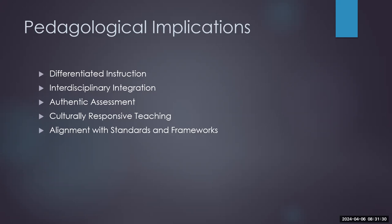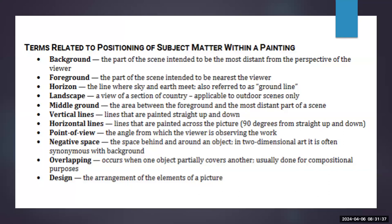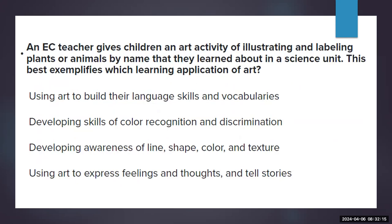Here's some more vocabulary specifically about paintings. Background and foreground are pretty obvious — most of us know what those are and what the horizon line is. Landscape is your outdoor scenes, a view of a section of country. Midground is the area between background and foreground. Most of these are pretty obvious things we've heard before — I just wanted to put them all together in one place.